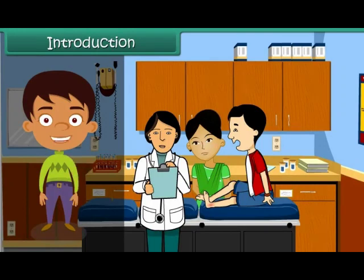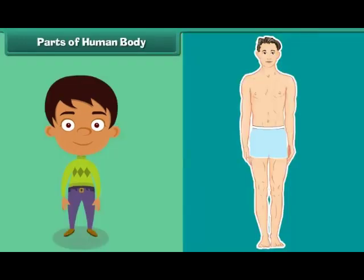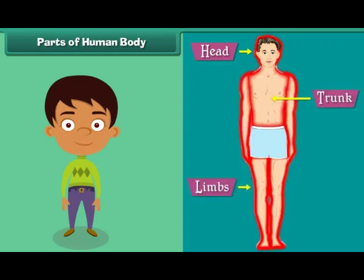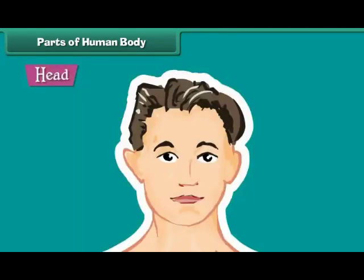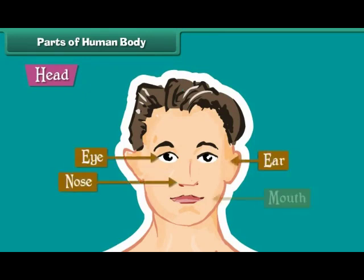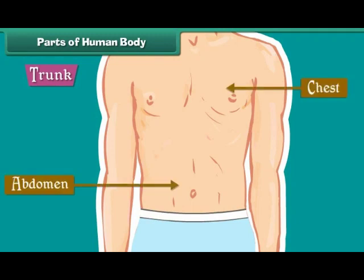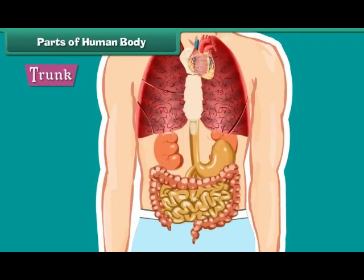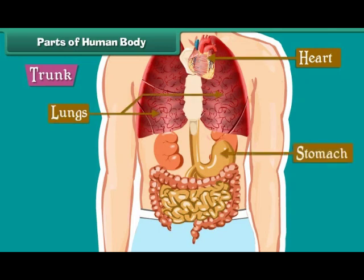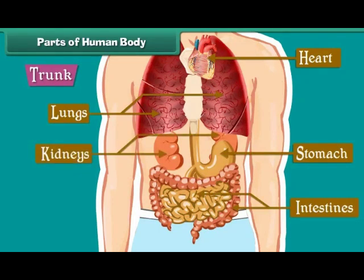In this lesson, you will learn about the different organ systems of our body and their functions. The human body is divided into three main parts: head, trunk, and limbs. The head is the uppermost part of the body — eyes, ears, nose, and mouth are located on it. The trunk is the middle part of the body, divided into chest and abdomen. Many important organs such as the heart, lungs, stomach, intestines, and kidneys are located inside the trunk.